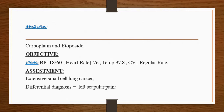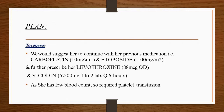Assessment: extensive small cell lung cancer. Differential diagnosis indicates left scapular pain. Plan — Treatment: we would suggest she continue with her previous medication, that is carboplatin 10 mg/mL and etoposide 100 mg/m² in a regimen, and further prescribe levothyroxine 88 mcg once daily and Vicodin 5/500 mg 1 to 2 tablets every 6 hours. As she has a low blood count, platelet transfusion is required.